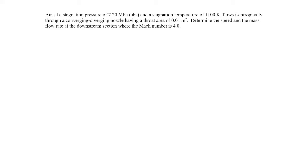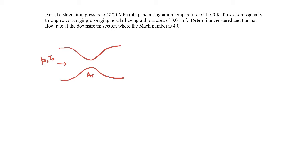In this example, we're told we have air at a stagnation pressure of 7.2 megapascals. We're also given the stagnation temperature, and it flows isentropically through a converging-diverging nozzle with a given throat area. We're given the stagnation pressure and temperature far upstream. The entire flow is isentropic. Determine the speed and the mass flow rate at the downstream section where the Mach number is 4.0.